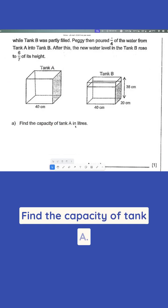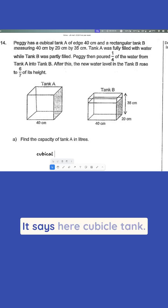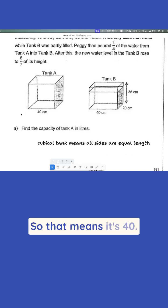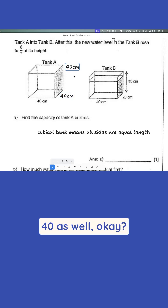Find the capacity of tank A, right? So cubical, what is this? It says here, cubical tank means all sides are equal length. So that means it's 40, that means this is also 40, and then this is also 40 as well, okay?